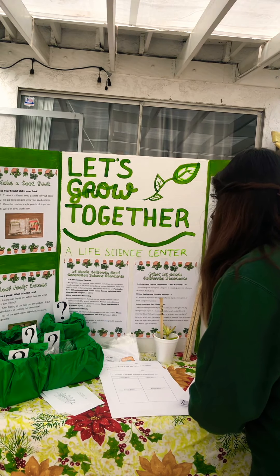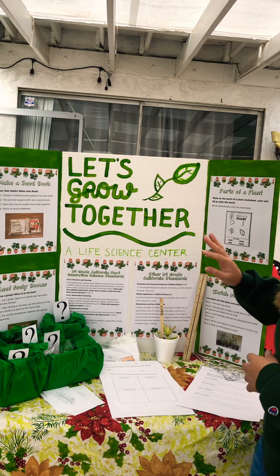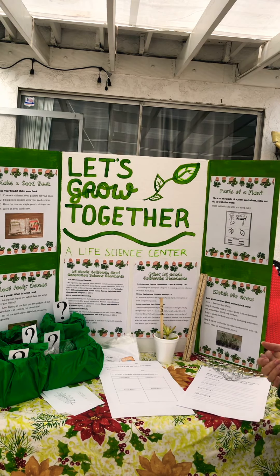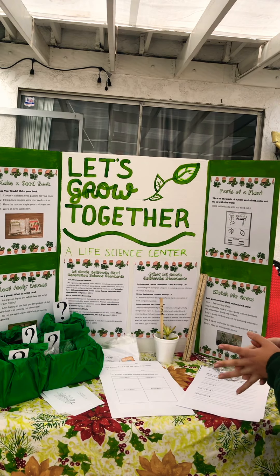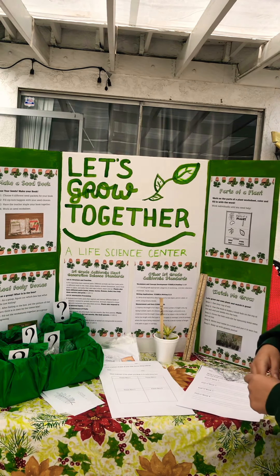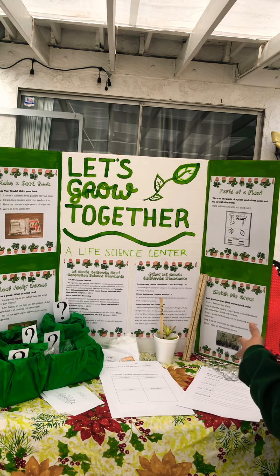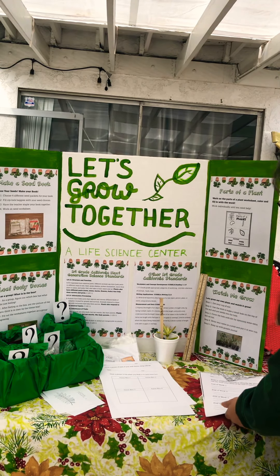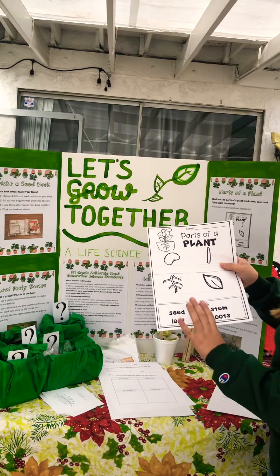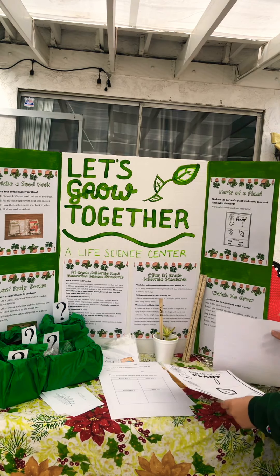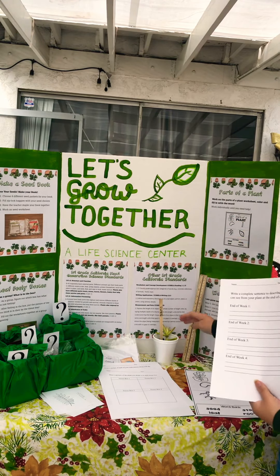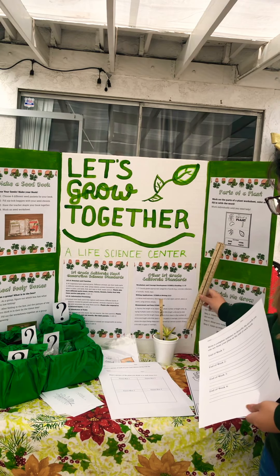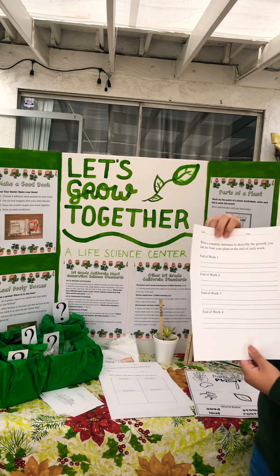All four activities cover those California science standards, and I also think they cover additional California standards, incorporating subjects from math to writing. For writing, I'm addressing vocabulary and concept development — specifically classifying grade-appropriate categories through the worksheet where students sort words related to plants. They'll also write descriptions for plant growth they observe. The measurement and data math standard is covered by having students measure their plant and keep track of weekly growth data.